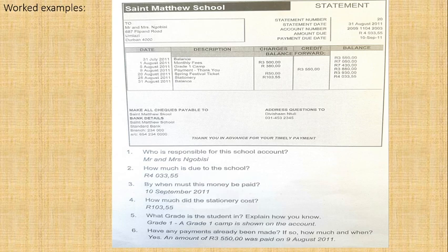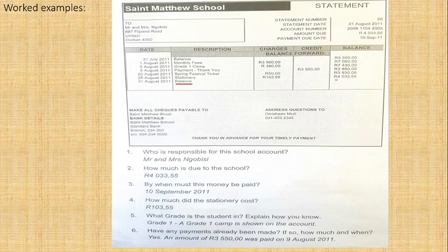Here's another worked example - the St. Matthew's School. This is a school statement; everybody has to pay school fees. Who is responsible for the school account? You'll see it says to Mr. and Mrs. Ngobisi - those are the persons responsible for this account. The second question is how much is due to the school. You'll see the closing balance on 31 August 2011 is four thousand and thirty three Rand and fifty five cents.